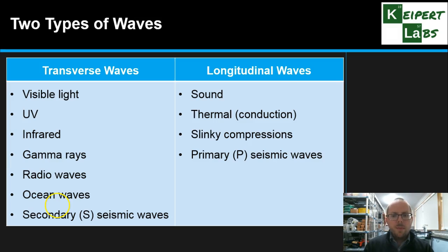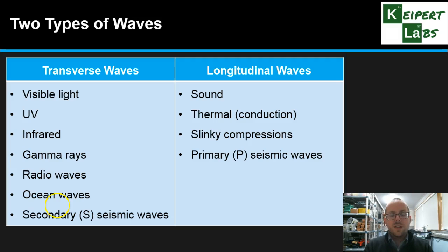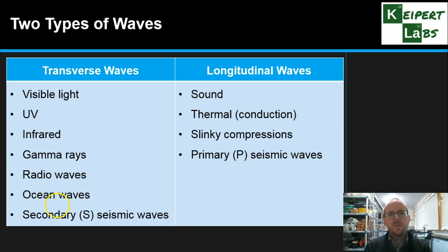So we've talked about what waves are — that they're a scientific model to help us understand how energy can travel. We looked at the idea that waves only transfer energy and not matter, using the Mexican wave as an example. We also saw that scientists talk about two main types of waves: transverse waves and longitudinal or compression waves. Thanks very much for watching. Bye for now.